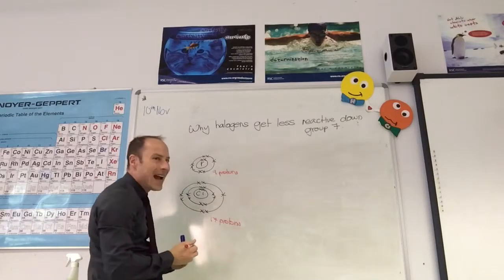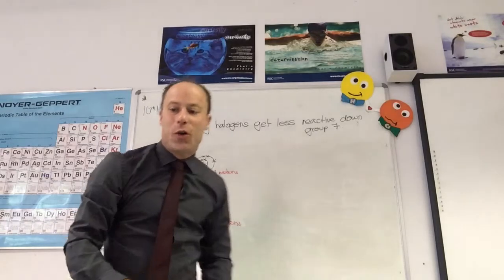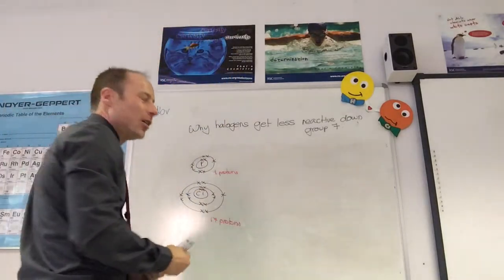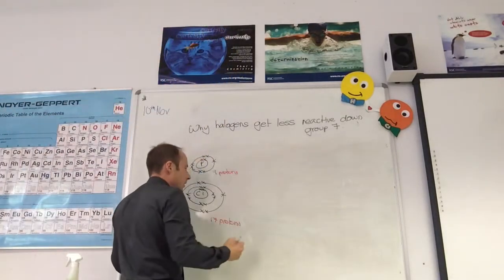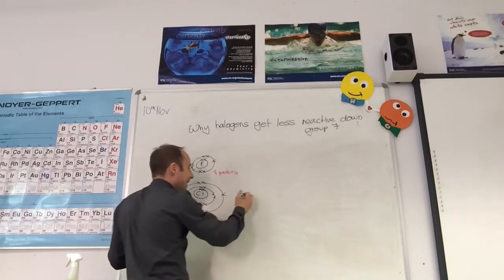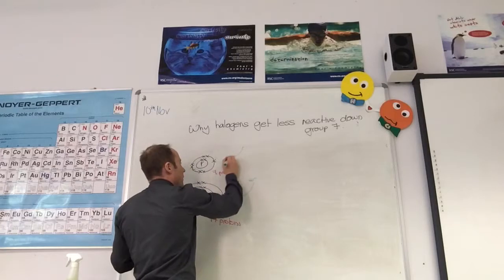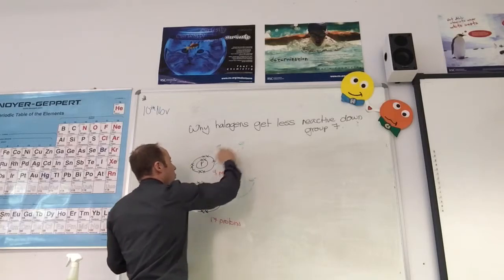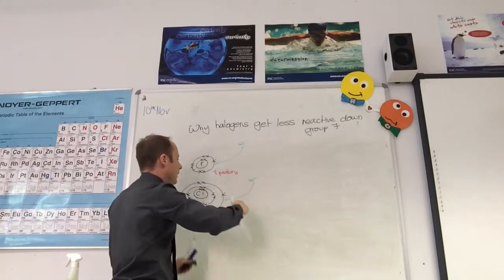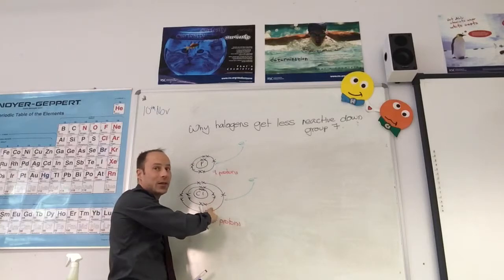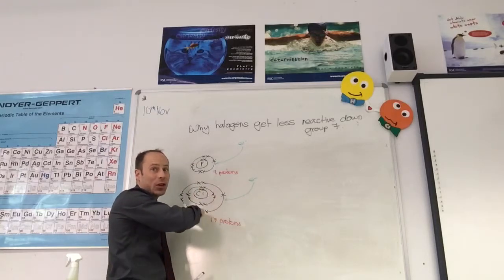What is actually happening? Chlorine is becoming chloride, so it is gaining an electron. An electron is coming in and being gained in both of these. Fluorine becomes fluoride, chlorine becomes chloride. They get full outer shells.